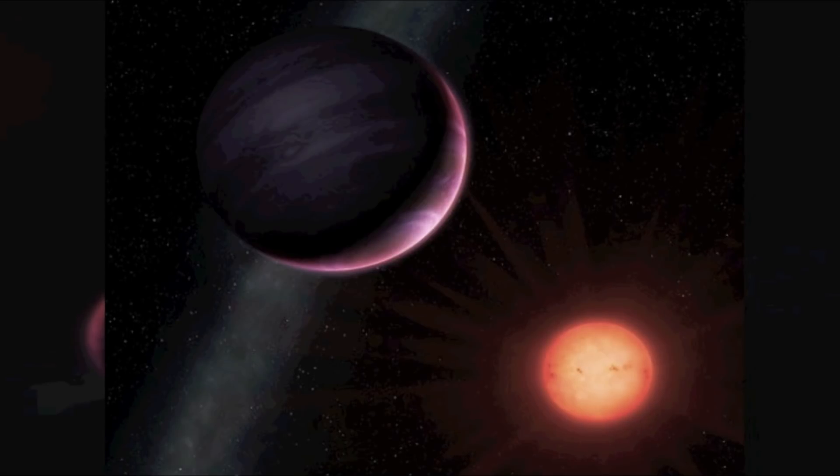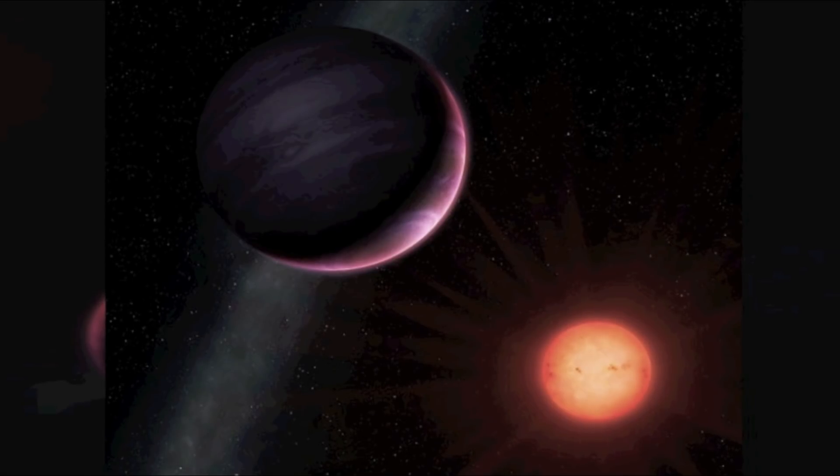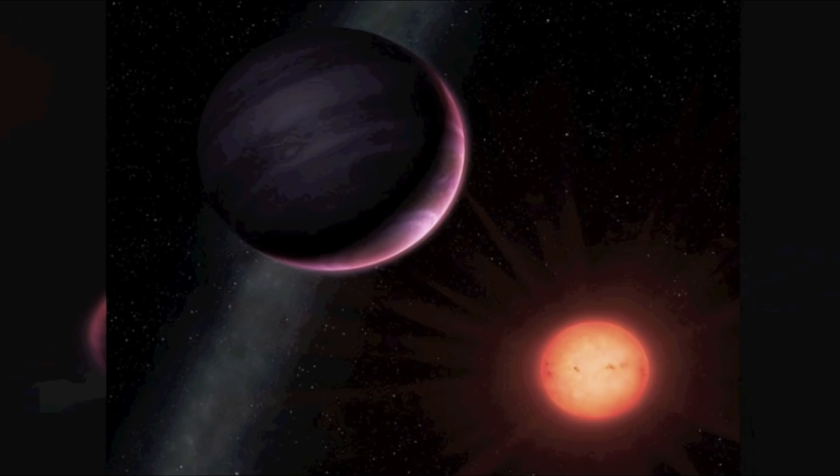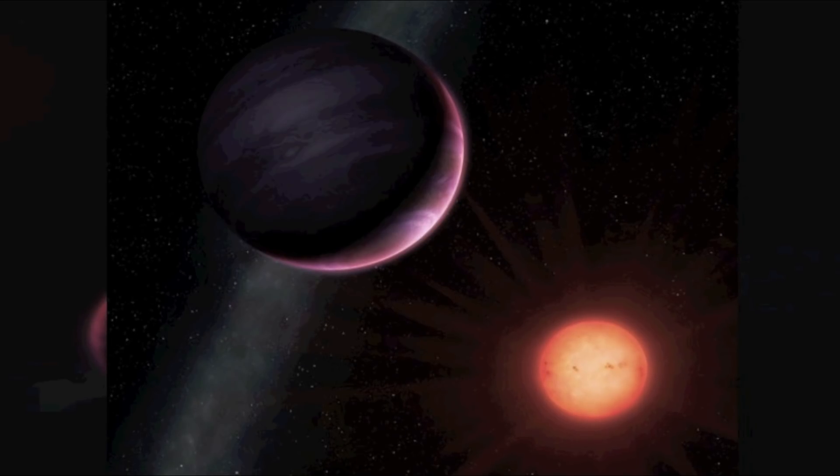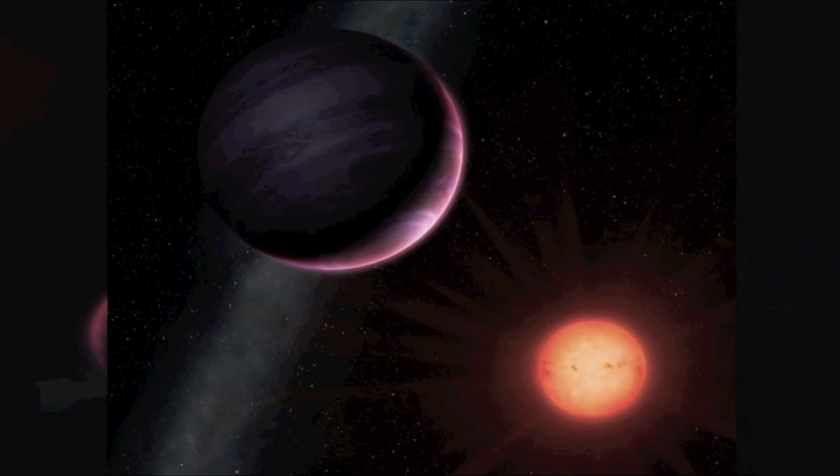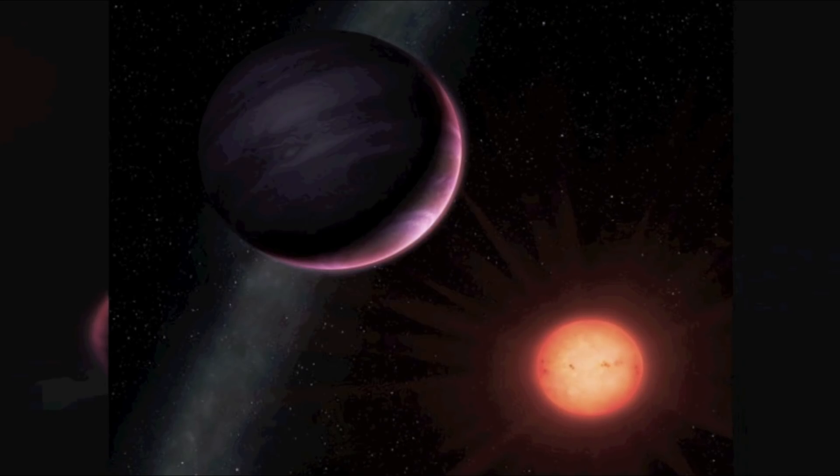Despite being a monster planet, NGTS-1b was difficult to find because its parent star is small and faint. He went on to explain that small stars are actually the most common in the universe, so it's possible there are many of these giant planets waiting to be found.